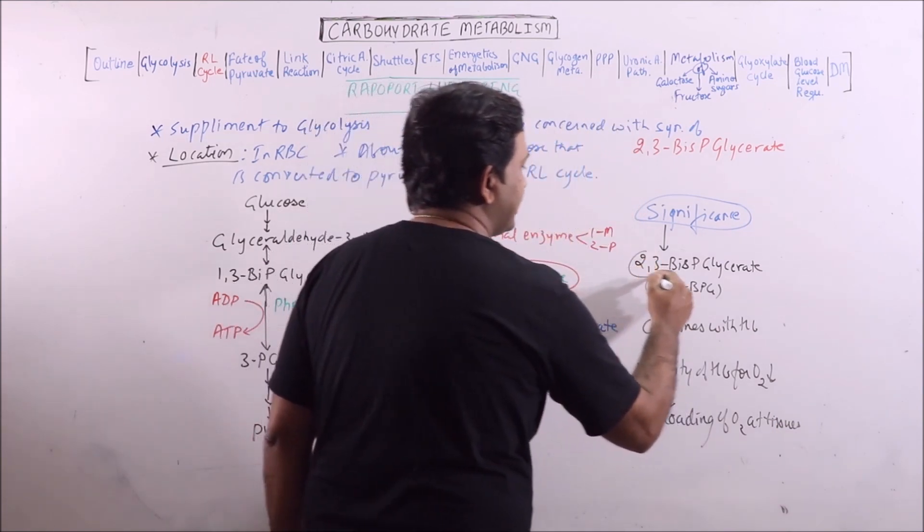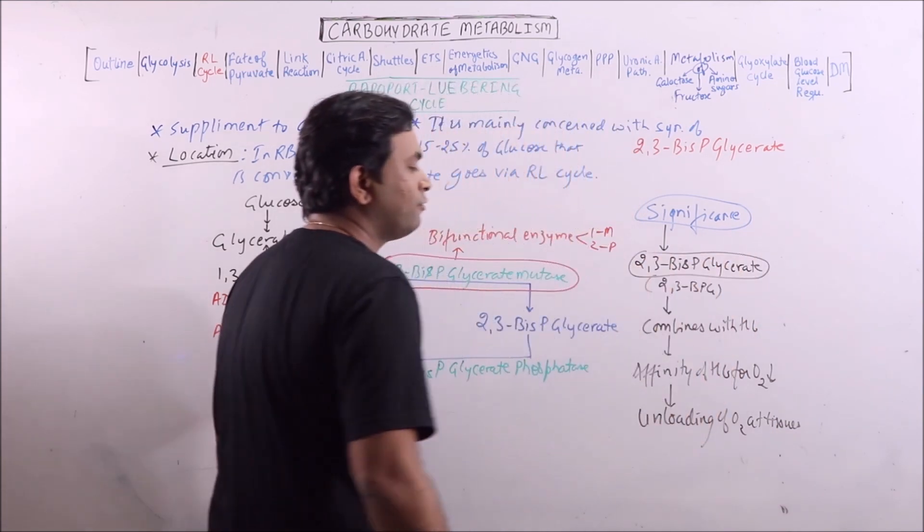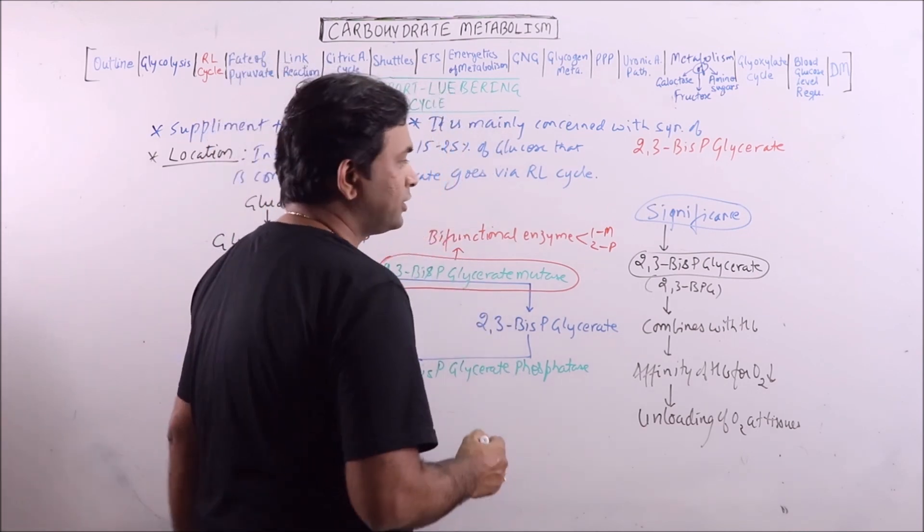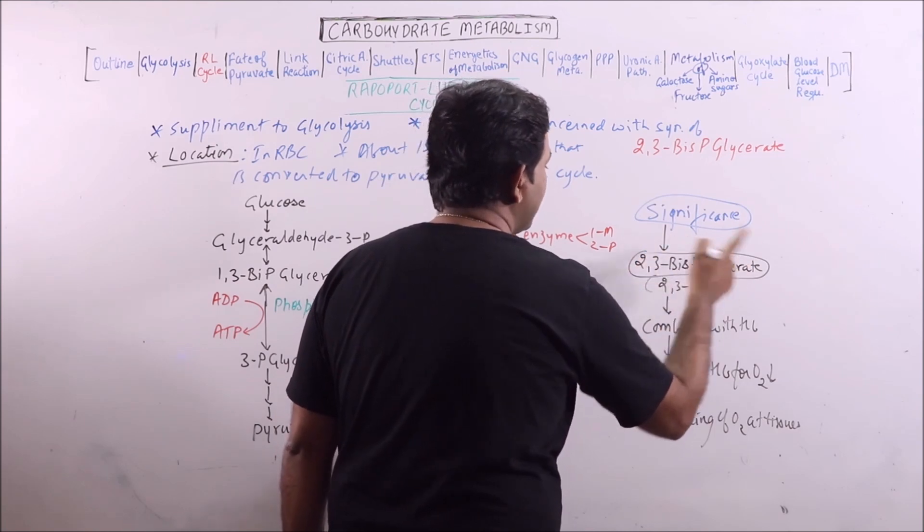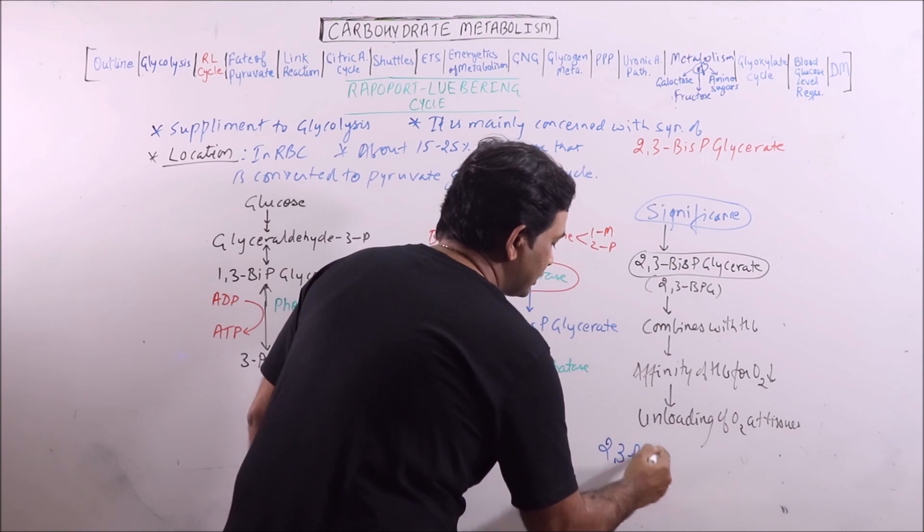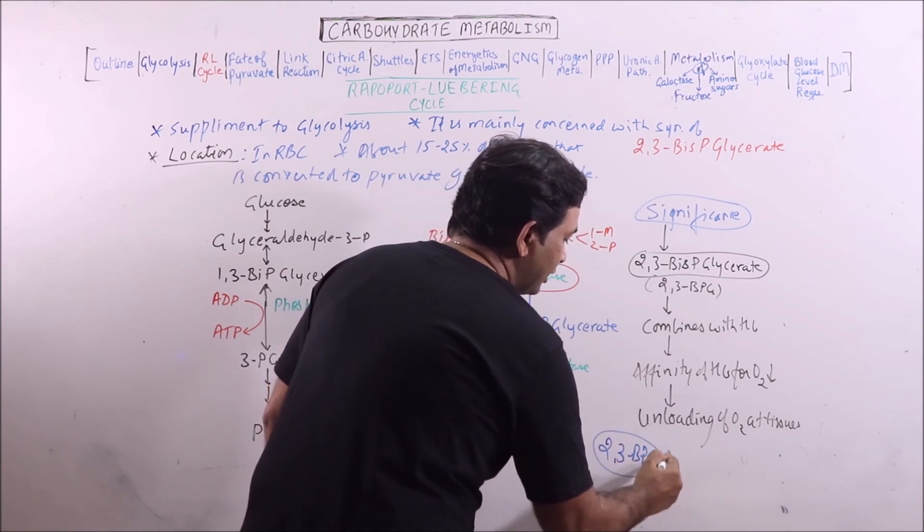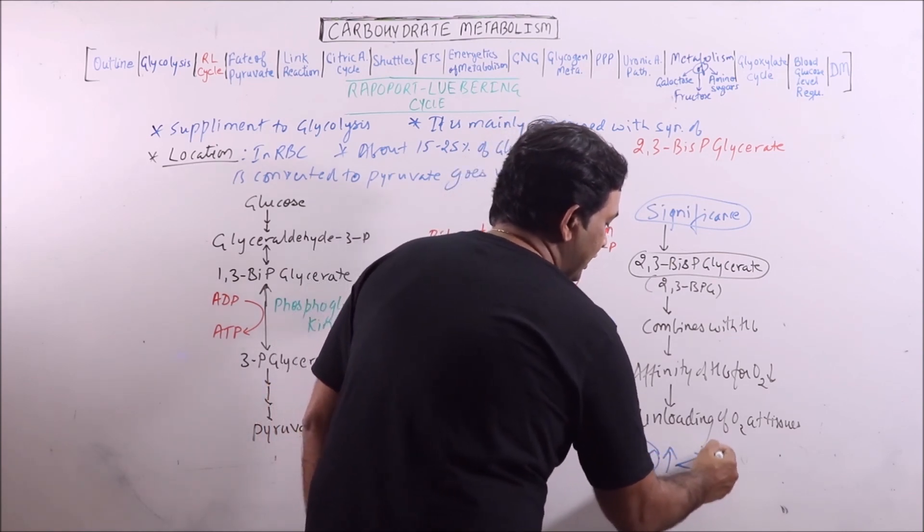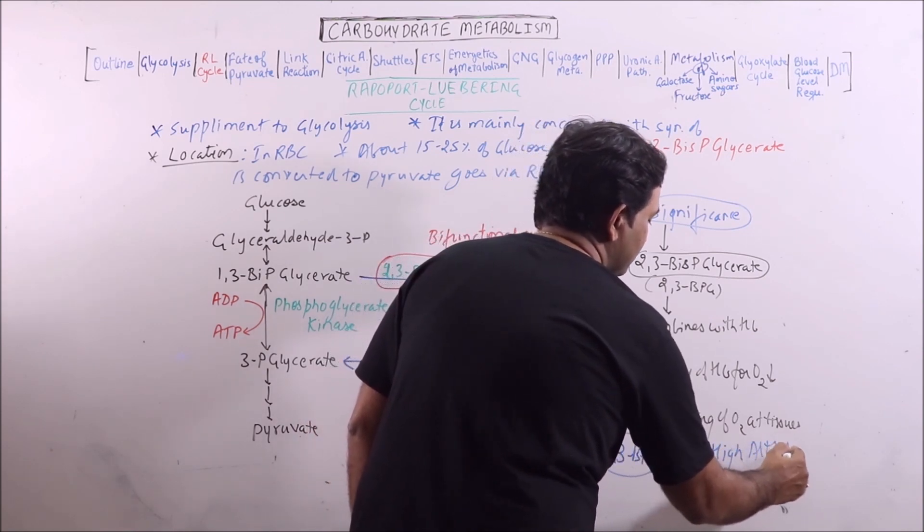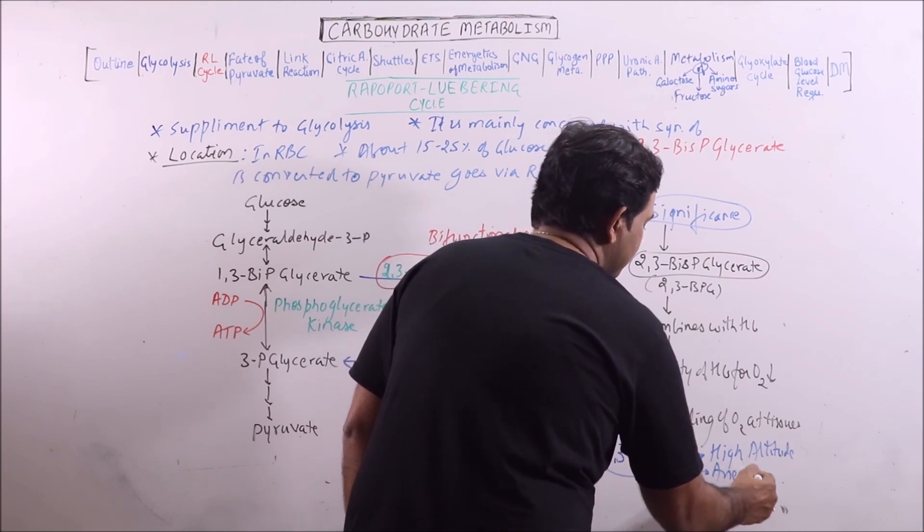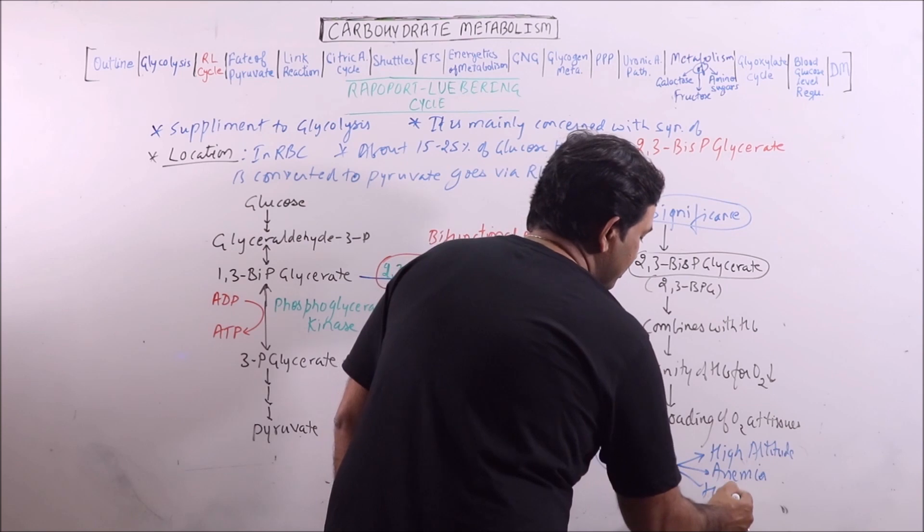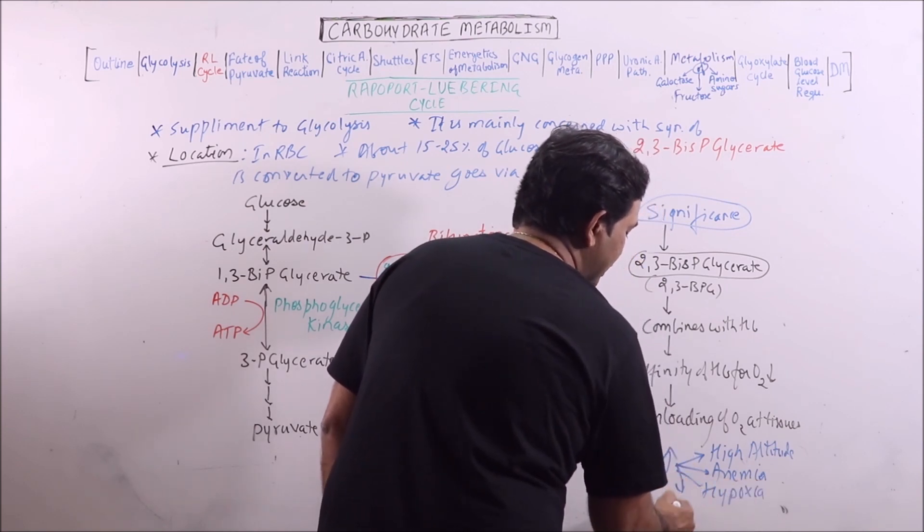So, this phosphoglycerate results in unloading of oxygen at tissues. It is important to note that the concentration of 2,3-bis-phosphoglycerate increases in some conditions like high altitude, anemia, hypoxia and fetal tissues.